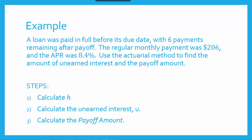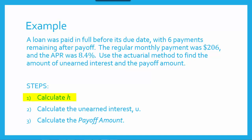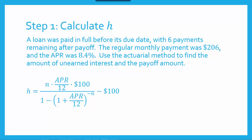Here's an example. A loan was paid in full before its due date with six payments remaining after payoff. The regular monthly payment was $206, and the APR was 8.4%. We're asked to use the actuarial method to find the amount of unearned interest and the payoff amount. Whenever we have to find the payoff amount, there are three steps: first, calculate H; second, calculate the unearned interest U; and third, calculate the payoff amount.